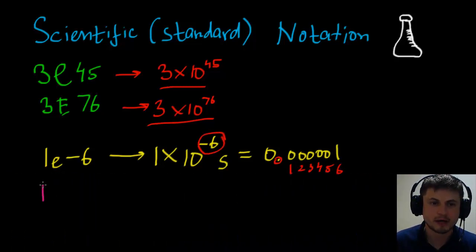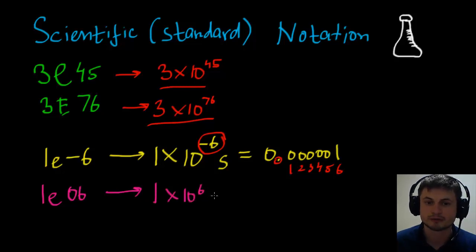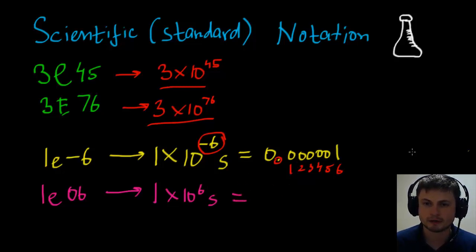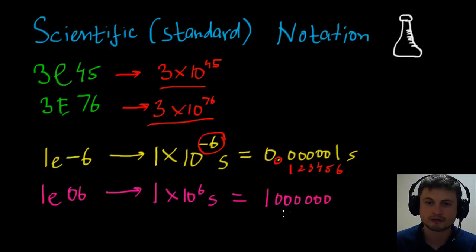Whereas if it's positive 6 — shown as 1E06 — that's 1 times 10 to the power of 6. Let's say this is also in seconds. So counting the digits: that's essentially 1 million seconds.